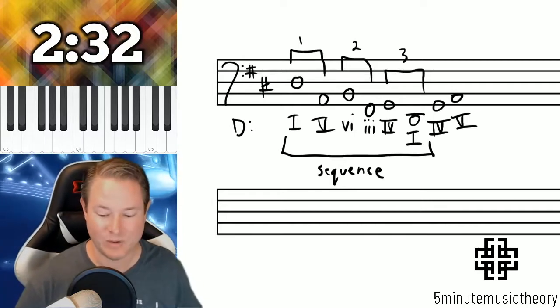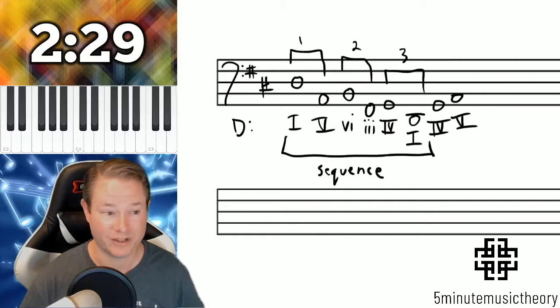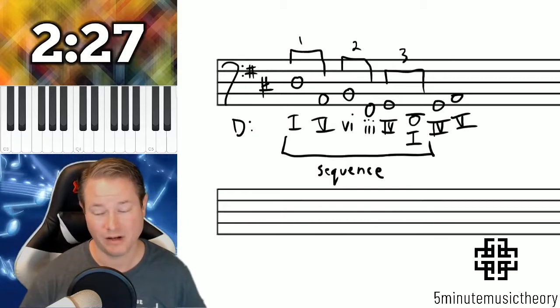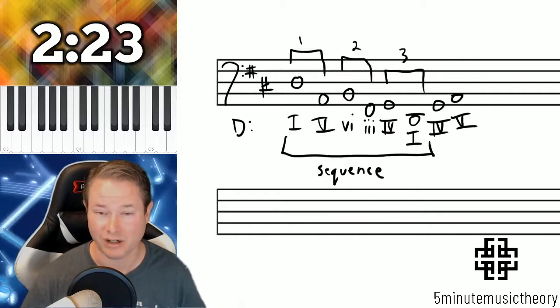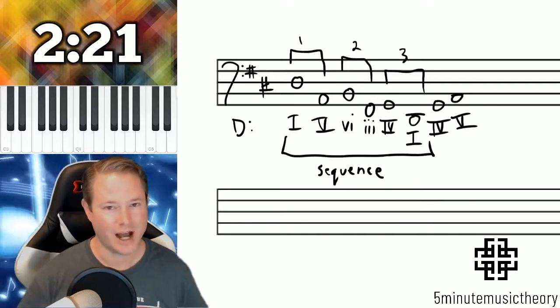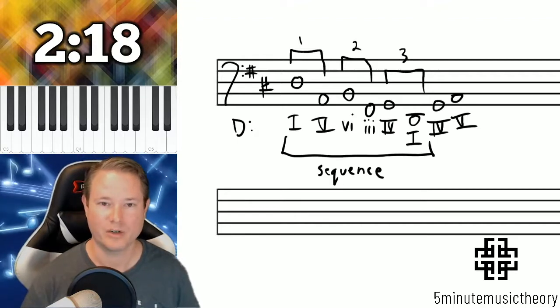So again, a sequence is a recurring pattern at different pitch levels. And if you think about a pattern, how many iterations do you need for a pattern to actually occur? Two is not really a pattern. That's just happenstance that two things happen in a row.